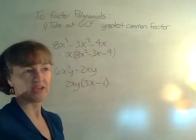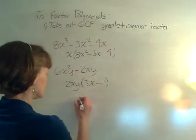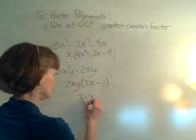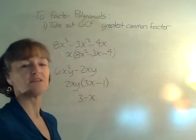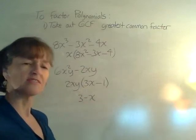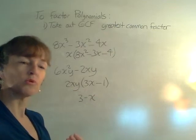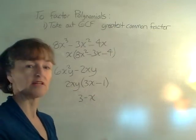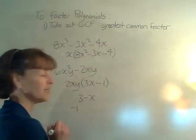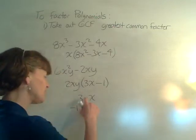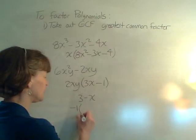One other important factoring tip: sometimes we have a binomial where neither term has anything in common. But sometimes we want to turn it around—we would rather it say x - 3 instead of 3 - x. We can achieve that by factoring out a -1.